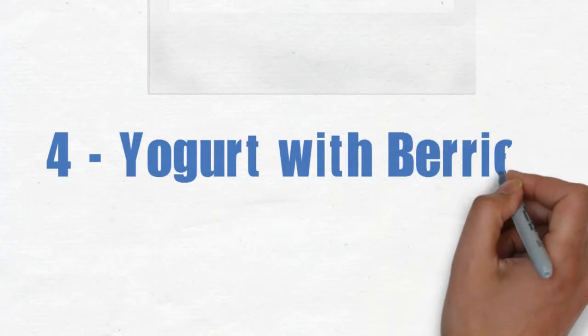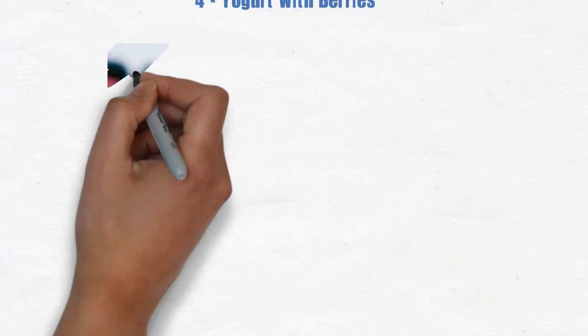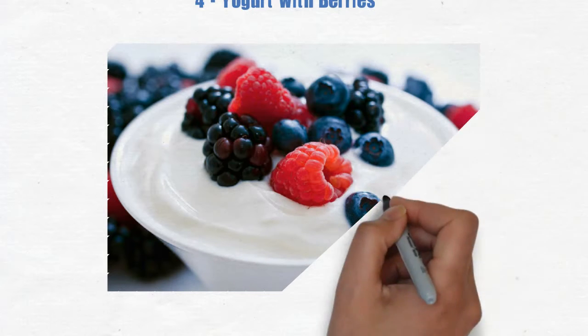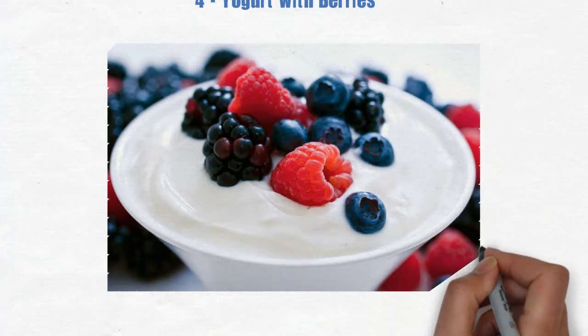4. Yogurt with berries. Aside from healthful probiotics, yogurt is also high in protein. When mixed with berries, which have bundles of antioxidants, this makes for a very healthy and quick snack.